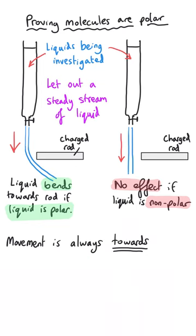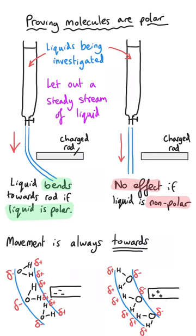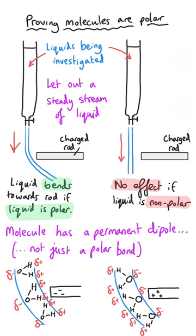The bending is always towards the charged rod because a polar liquid will be able to orientate itself favourably to attract towards the rod whether it is positively or negatively charged. For instance, if it was water and you held a charged rod near the stream, the electron-deficient hydrogen would be attracted to a negatively charged rod, whereas the oxygen part of the water would be attracted towards a positive rod. This proves that a molecule like water does have a dipole moment — meaning the molecule contains a permanent dipole, not just a polar bond.